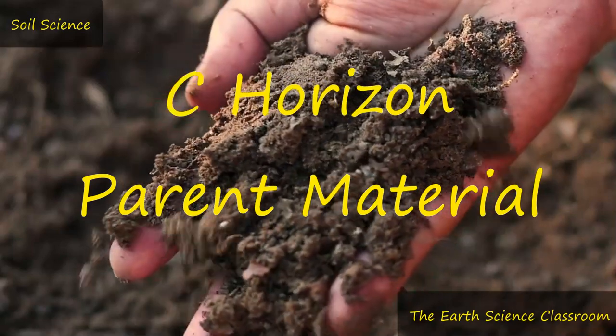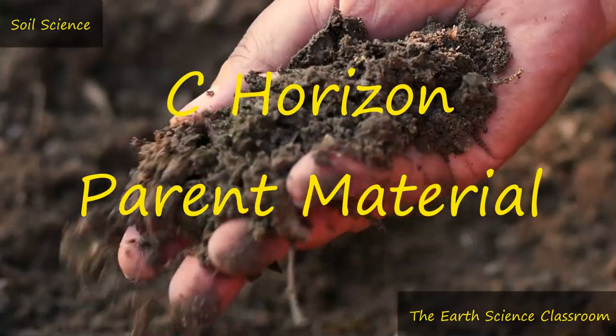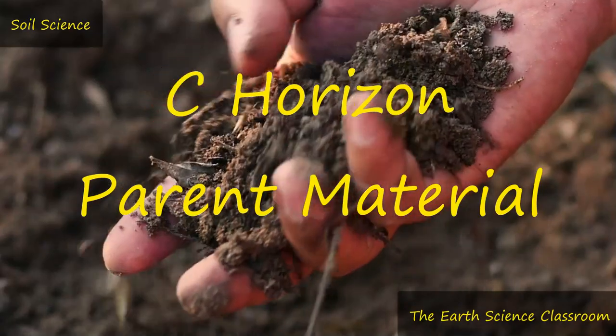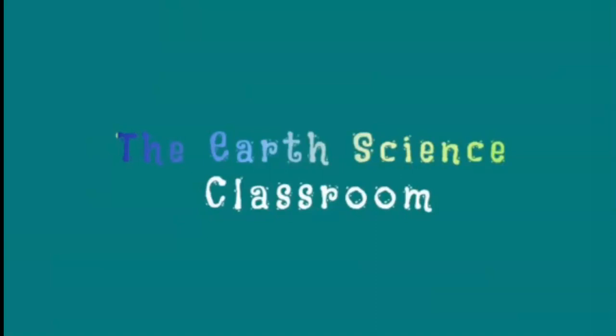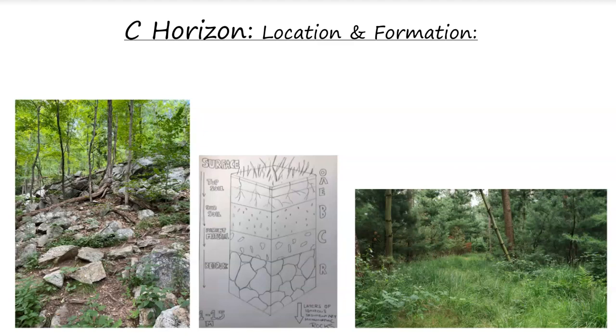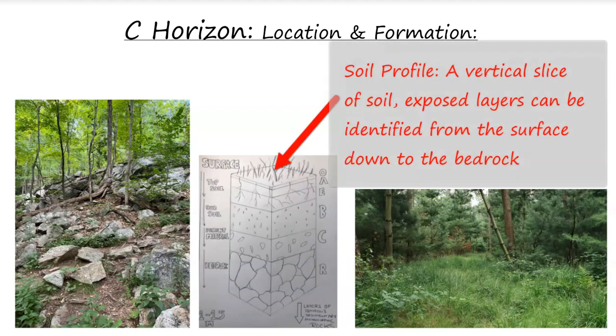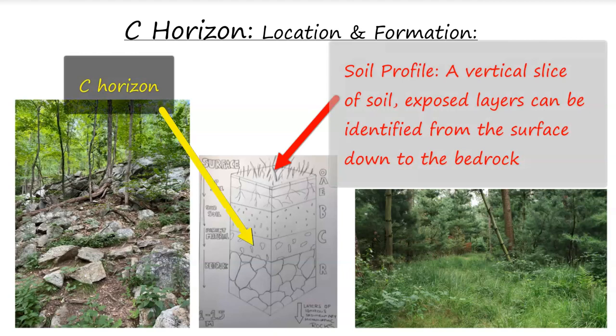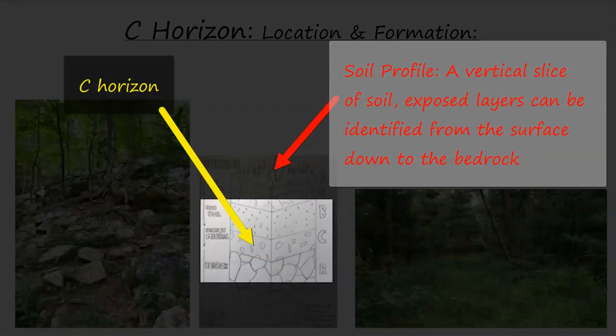I'm looking at the characteristics and formation of this amazing C horizon, which lays the foundation for our soil above it. To begin with, the C horizon, which we can see in this middle diagram, is the first layer above the bedrock, or R horizon. In the opposite sense, it is the lowest layer of soil, or substratum, before you get to the bedrock.